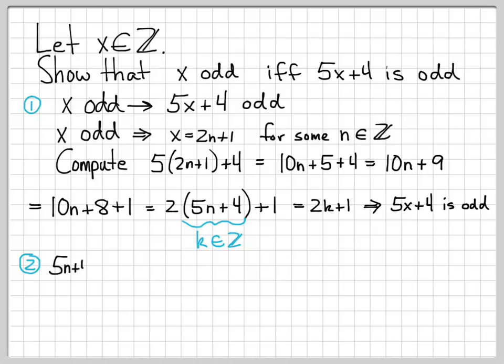Case 2 is assume 5x plus 4 is odd and show that this implies that x is odd. Assuming 5x plus 4 is odd, we want to show that this implies that x is odd.